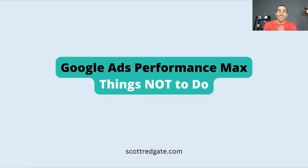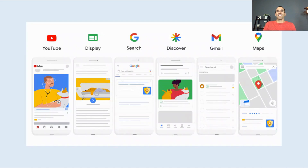In this video we're going to talk about the things you should not do inside of Performance Max as you set up and manage a campaign. But first, a basic overview: Performance Max is Google's campaign type that stretches across their entire network of websites — YouTube, Display, Search, Discover, Gmail, and Maps. As an advertiser, your advertisement can show on any of those placements.